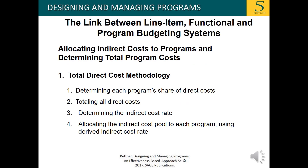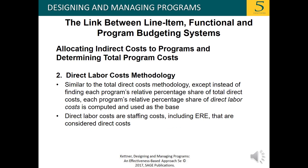The total direct cost methodology determines each program's share of direct costs, totals all direct costs, determines the indirect cost rate, and allocates the indirect cost pool to each program using the derived indirect cost rate. The direct labor cost methodology is similar to the total direct cost methodology, except that instead of finding each program's relative percentage share of total direct cost, each program's relative percentage share of direct labor cost is computed and used as the base.